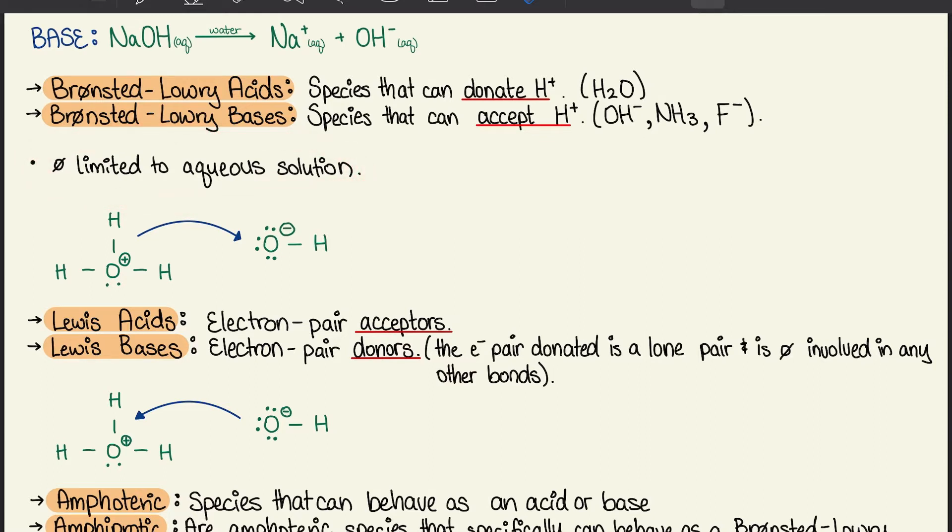We have a hydronium ion with an oxygen and three hydrogens around it that will happily donate one of its hydrogen ions to the hydroxide ion on the right. Next we have Lewis acids and bases. Lewis acids are electron pair acceptors, whereas Lewis bases are electron pair donors. The electron pair donated is a lone pair and is not involved in other bonds.